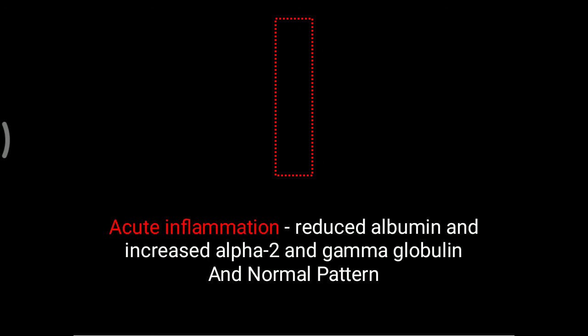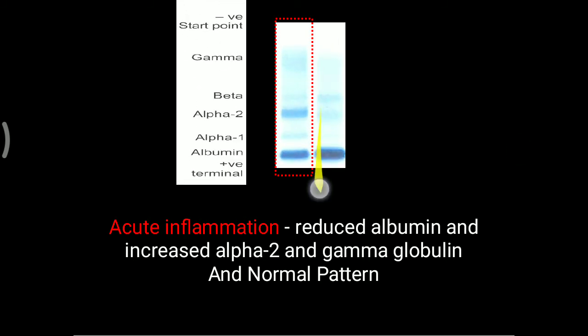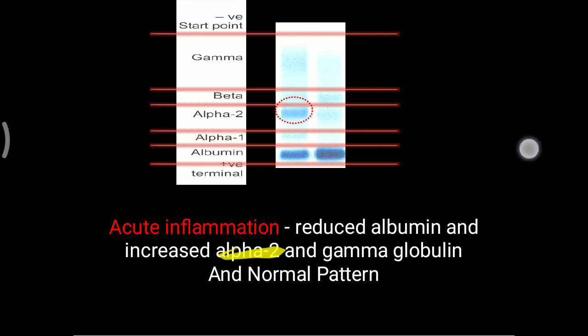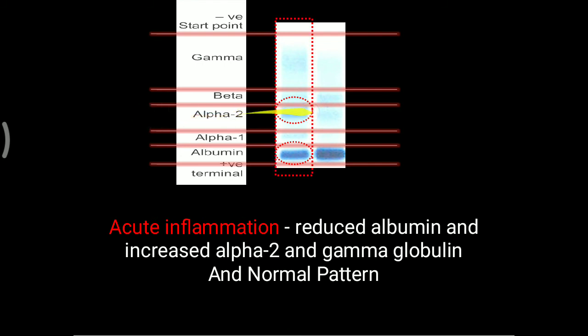One more condition is acute inflammation. In acute inflammation, albumin is reduced and alpha-2 and gamma globulin are increased. The alpha-2 band shows prominency, as does the gamma globulin region, while albumin is reduced. Alpha-2 contains platelet-derived growth factor and many important proteins, all showing prominency in acute inflammation.